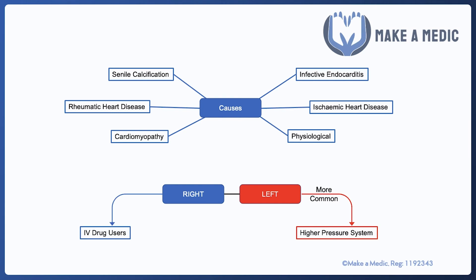On the other hand, right-sided heart murmurs tend to be more common especially among IV drug users, and this is a type of question that classically comes up in exams. The reason is that IV drug users tend to introduce Staph aureus from their skin into their bloodstream when they inject. Staph aureus is a very aggressive bacterium — generally not a problem on the skin, but when introduced to the bloodstream it is very sticky, can get stuck in various parts of the body, and establish infections. One of the first places it can cause problems is the right-sided heart valves, particularly the tricuspid valve, which can get damaged by vegetations caused by Staph aureus.